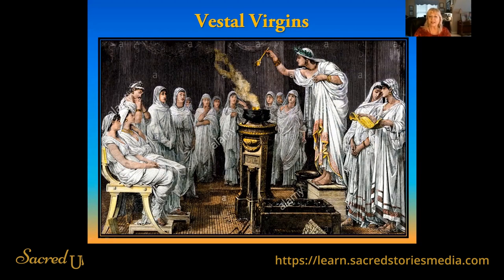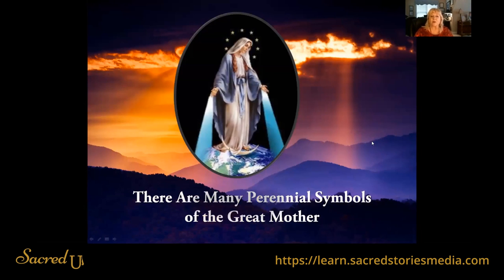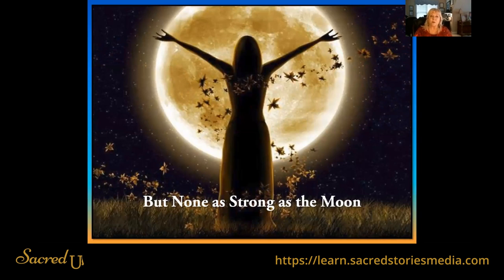Those Vestal Virgins — this is a really cool image where they're actually doing some scrying work. There are corollaries to Vesta: Bridget in the Celtic tradition also played a lot of that same role of illumination. The goddess gives us insight into the feminine face of God who lives within the cosmos. This is a gorgeous painting of Parvati — she's just beautiful — and she holds the divine masculine in her hands. Now there are many great symbols to the Divine Mother, and we're really going to spend time on all of these in our next presentation. But in this one, we really want to talk about the moon, because of all the symbols of womanhood, the moon has probably been the one most connected with the Divine Mother and the Divine Feminine.